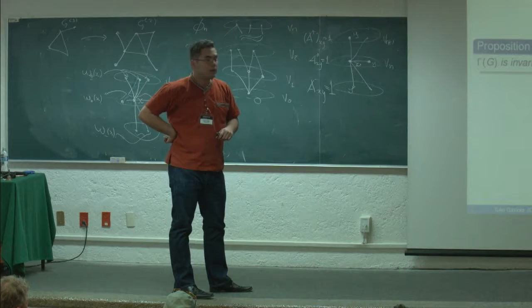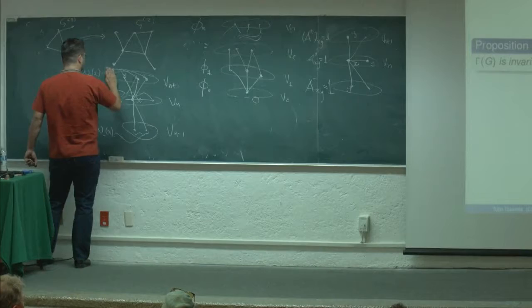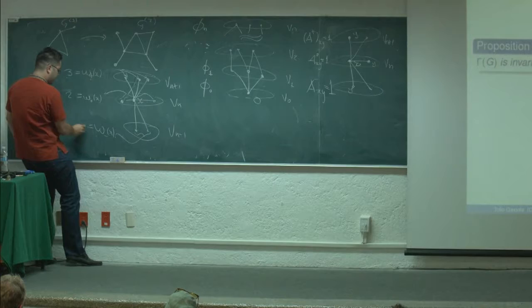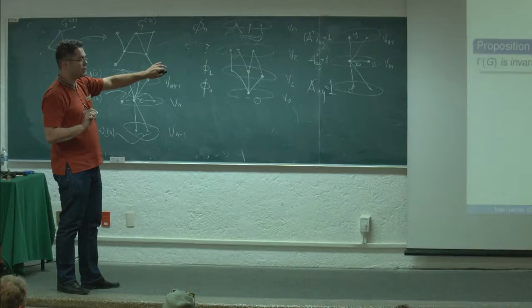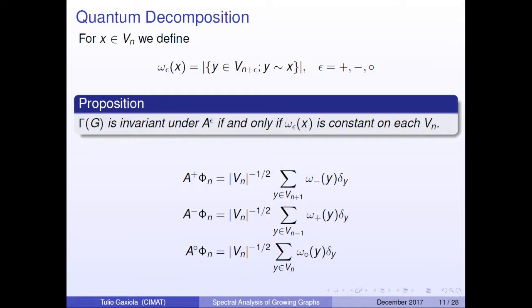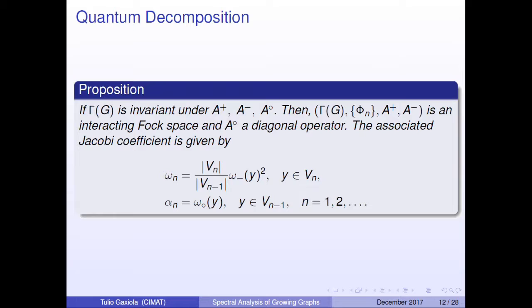For example, omega is equal to 3 and this other value equals 2. When these numbers are constant at each level, the Hilbert space is invariant and we can establish these relations. This tuple is an interacting Fock space related to Jacobi coefficients.